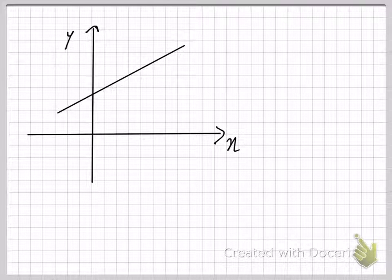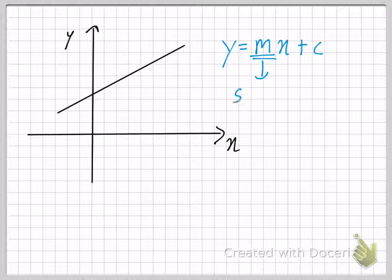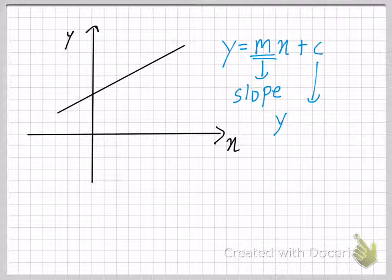In this video, I will teach you how to calculate the equation of a straight line. Now, remember the general form of a straight line is y equals mx plus c, where m, as you should be familiar by now, is the slope, and c is the y-intercept.